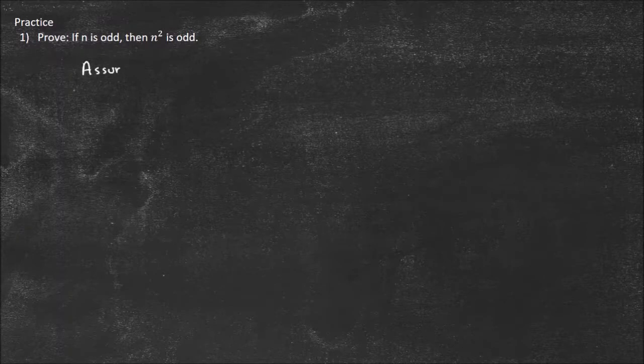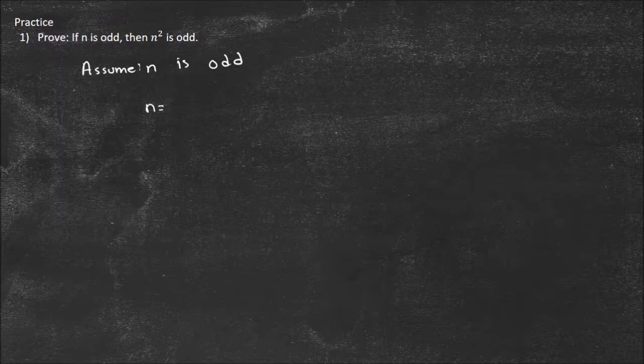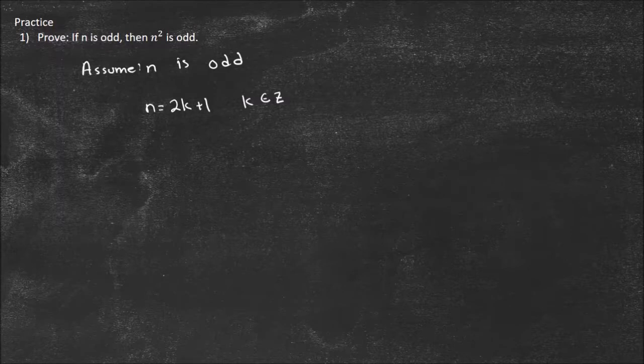So let's look at an example: if n is odd then n squared is odd. We need to assume n is odd. So assume n is odd and we want to arrive at the conclusion that n squared must be odd. How do we write an odd number in proofs? n equals 2k plus 1 — that's how we write odd numbers. That's really important. You're going to see that a lot, where k is an element of ℤ, meaning k is an integer.